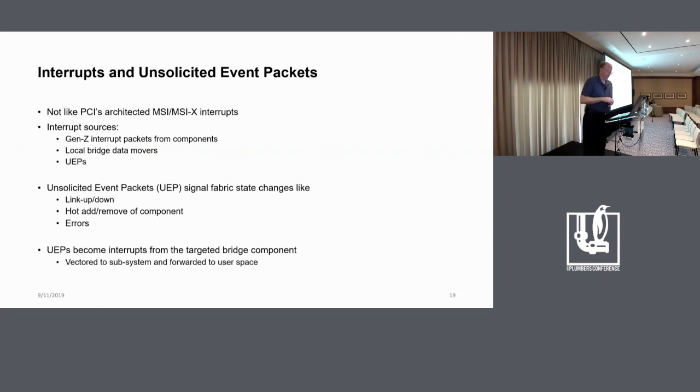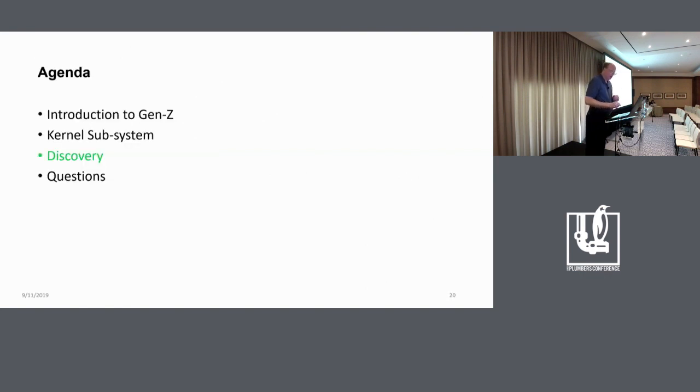Interrupts can come from the bridge when the data mover has a completion queue that entry that's done or some incoming packet comes into the received data mover that will want to generate interrupts. And then there are these things called UEPs, unsolicited event packets, which are the Gen Z mechanism for a single component or some component in the fabric to signal kind of fabric state changes like links up and down or how to add and remove components or errors. And so we need to have mechanisms to pass those interrupts up into user space if there are user space managers that are handling that. And our proposal is that those UEPs become local interrupts on the targeted bridge component. Those are handled by the subsystem and then forwarded to user space by some mechanism, perhaps Netlink, which we'll talk about here some more in a minute. Okay, that's kind of the end of our kernel subsystem part of this.